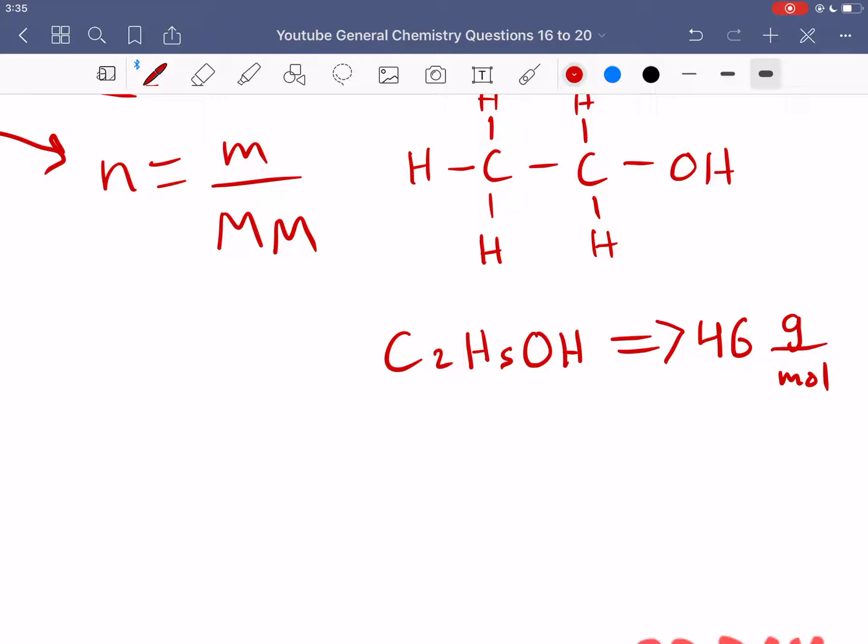To get molar mass, you need to know the chemical formula. If we have two carbons, the molar mass of carbon is 12 times 2, plus 1 for the hydrogens and 16 for the oxygens. Add that together and you get 46.